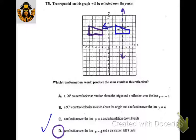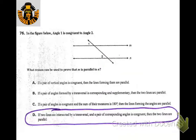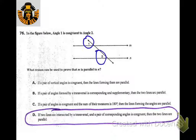Angle 1 is congruent to angle 2 — those are corresponding angles. If two lines are intersected by a transversal and a pair of corresponding angles are congruent, then the lines are parallel.